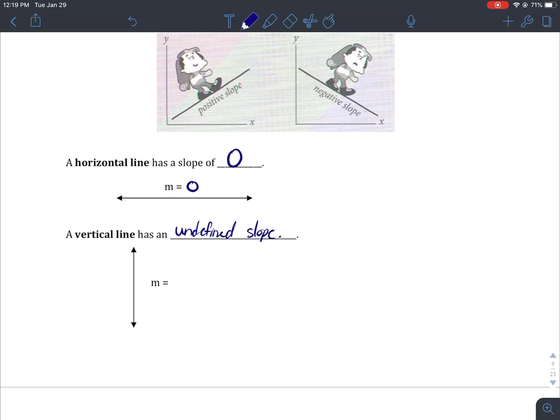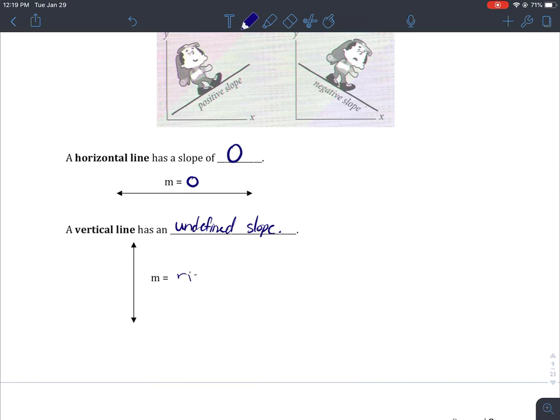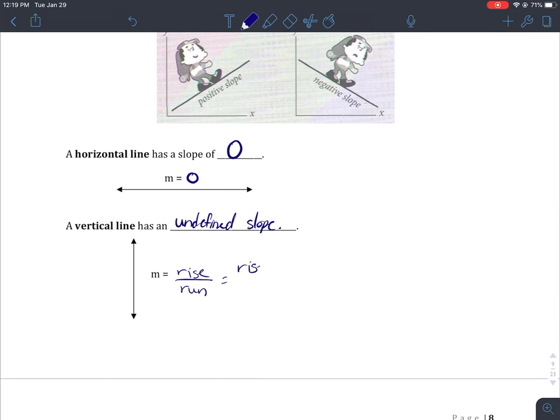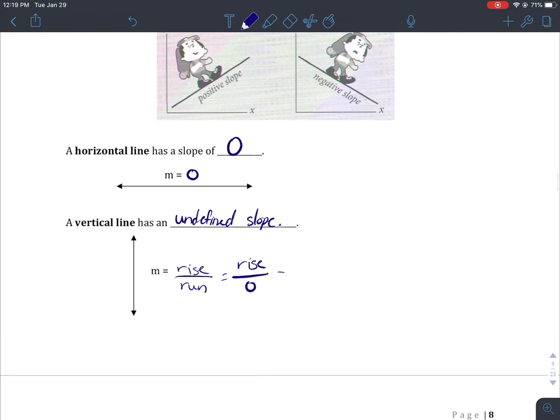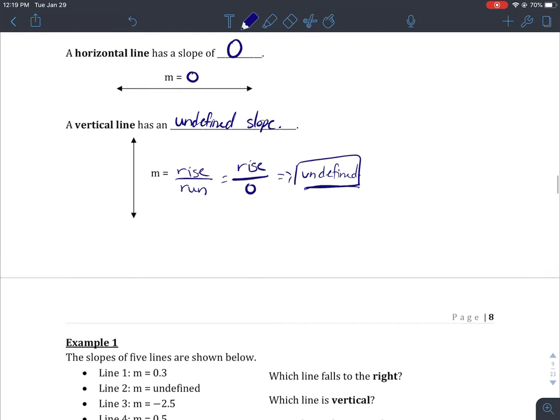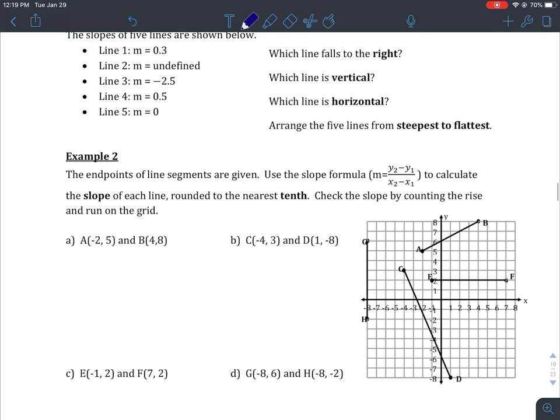A vertical line has a slope that is undefined. If I use my slope equation, rise over run, it doesn't matter what I have for the rise - I'm going up or down regardless - but the run is where I have a problem. I'm not going left or right, and I cannot divide by zero. That's an undefined quantity. If I have a vertical line, the slope is undefined. If it's horizontal, my slope is zero.